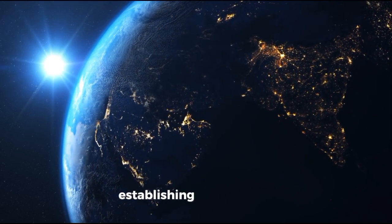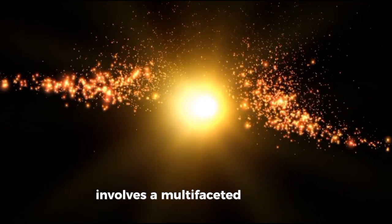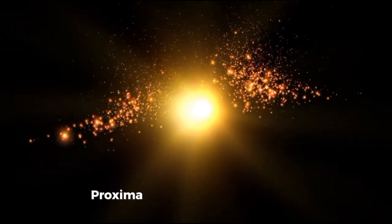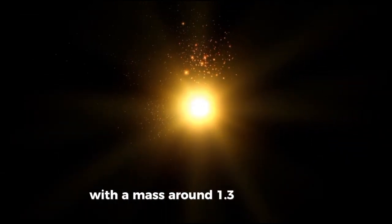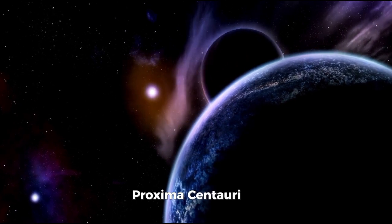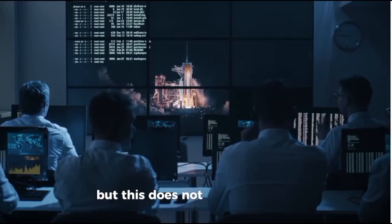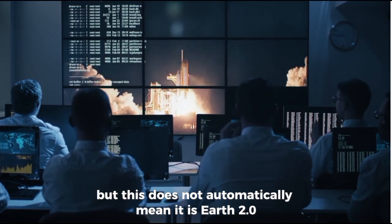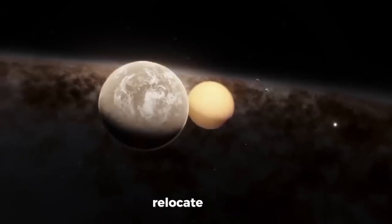However, establishing whether an exoplanet can sustain life involves a multifaceted array of variables. Proxima b is regarded as an Earth-sized world with a mass around 1.3 times that of Earth and completes one orbit around Proxima Centauri in approximately 11 Earth days. But this does not automatically mean it is Earth 2.0, nor does it guarantee we can realistically relocate there.